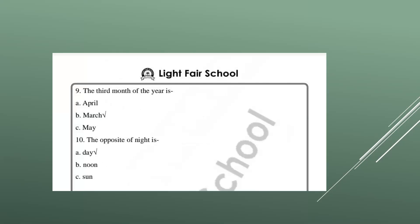Number nine: the third month of the year. January, February, March — March is the third month of the year. So option B is correct, put your tick mark there. Number ten: the opposite of night is day. Night is dark and day is colorful and full of light.